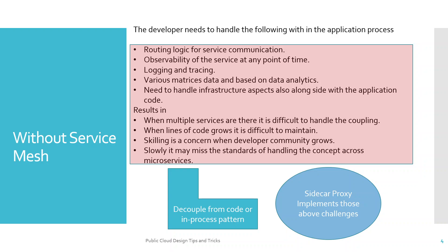If you do not have a service mesh, the impacts are: when a developer writes code for a component or microservice, he or she has to deal with routing logic for service communication, observability of the service at any point of time — a kind of health check — logging and tracing capability, and various metrics data for data analytics. The developer needs to handle infrastructure aspects alongside the application code, which is also called the in-process design pattern.